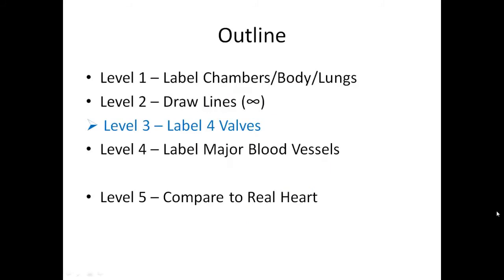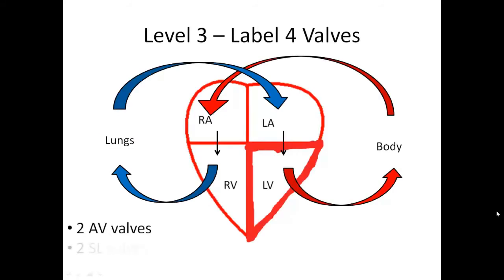Now moving on to level three — the valves. You can still draw this simply on paper: draw your heart, add the plus sign, put the arrows in like an infinity sign. There are four valves: two AV valves and two SL valves. AV stands for atrioventricular — they're located between the atrium and ventricle on each side. SL are the semilunar valves — located where blood leaves the ventricles into their respective great vessels. The right AV is on the right, and the left AV is on the left.